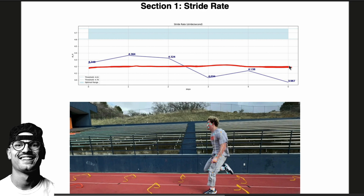This is an early season video, and through the seasonal progression we will want to see this number increase. You see this blue area — this is what elite sprinters can hold at their maximal velocity, right around 4.7 to 4.8 steps per second. This is given that the rest of the biomechanics of the stride is also within good parameters.